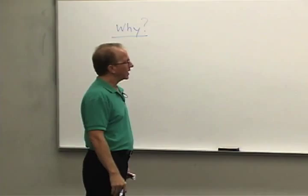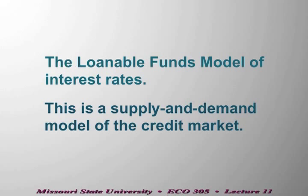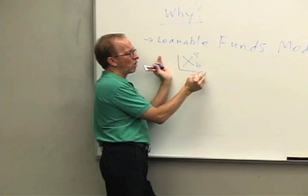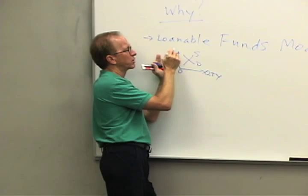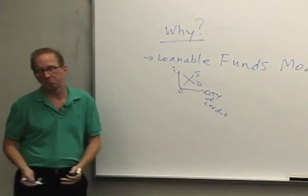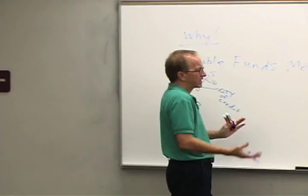There is a model known as the loanable funds model of interest rates. Loanable funds — another term for that is just credit. This is a model of the credit market. Basically it comes down to a supply and demand model. The quantity is on the horizontal axis, and the price of credit — the interest rate — is on the vertical axis. It's a very simple model, but it accurately depicts what takes place in the credit markets.